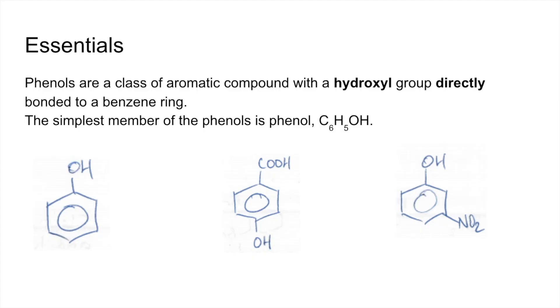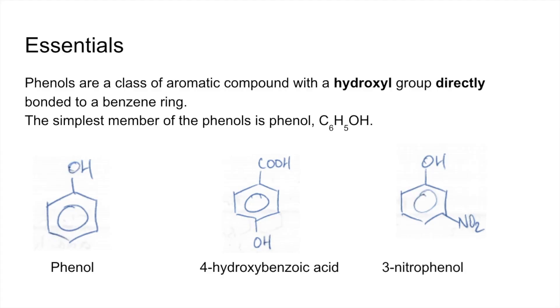So the first one, the one on the left, is phenol itself. The middle one is 4-hydroxybenzoic acid. And the one on the right is 3-nitrophenol.